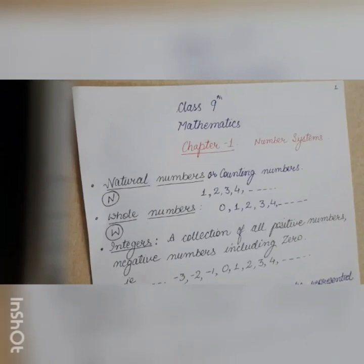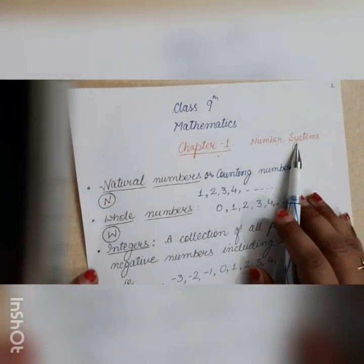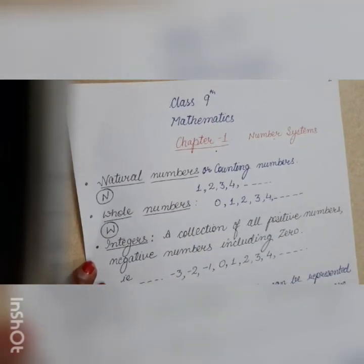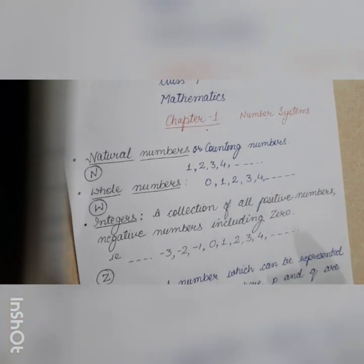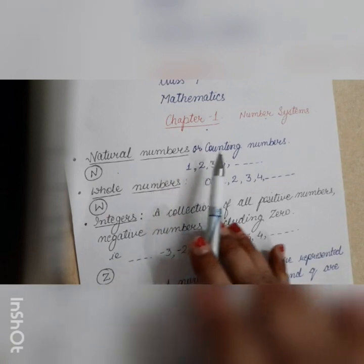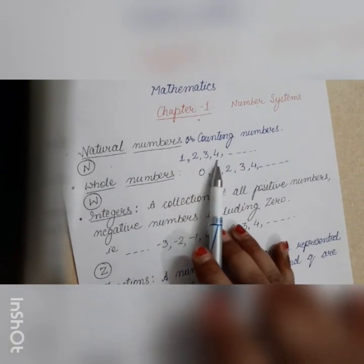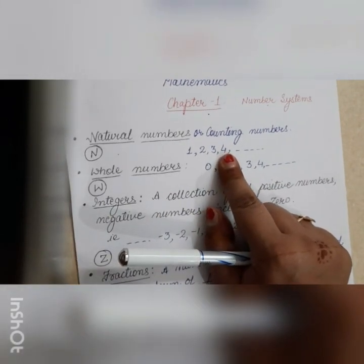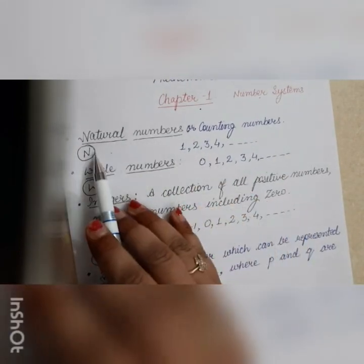Hello students, I hope you all are fine and doing well. Today we'll be starting with Chapter 1: Number Systems of Class 9 Mathematics. Before starting the chapter, let us recapitulate what you have done in your previous classes — like different types of numbers. Natural numbers, which you call counting numbers, are one, two, three, four, and so on. They are represented by the letter N.